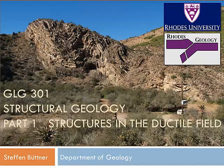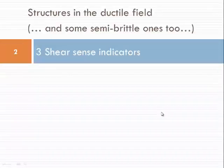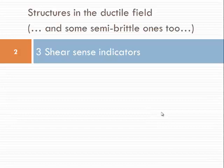Ladies and gentlemen, this is the third chapter on our course on structural geology in part one, structures in the ductile field. We are going to talk about shear sense indicators, particularly those in the ductile field, but also some of the semi-brittle shear sense indicators we will cover here.